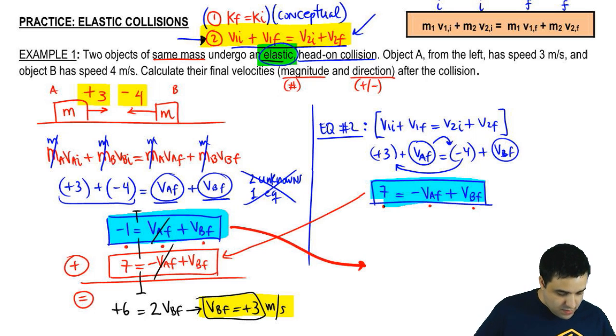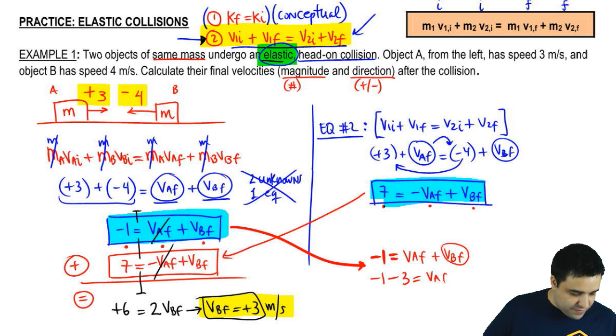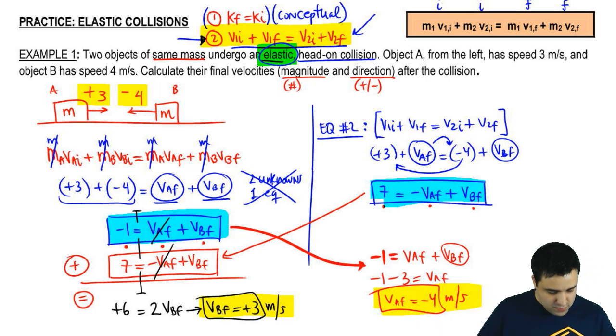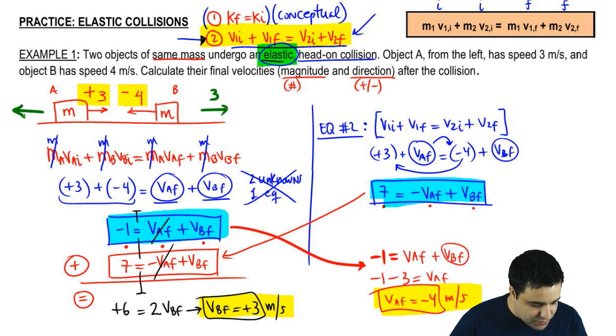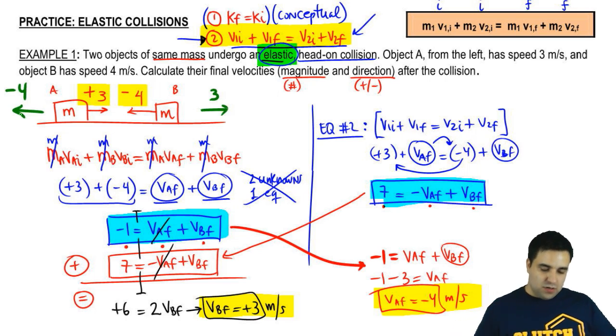Let's move this over here, and I have negative 1 equals VAF plus VBF. Negative 1, VBF is 3 over here. It's going to go to the left as a negative 3. VAF, therefore, is negative 4 meters per second. This is positive, so it's going to the right. So, B, after the collision, is going to go to the right with 3, and A, after the collision, is going to go to the left with 4.